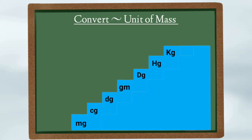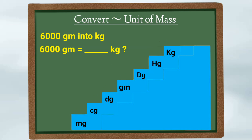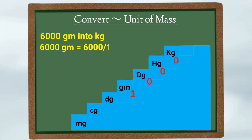Lastly, let's convert units of mass: 6000 grams into kilograms. Gram is a smaller unit than kilogram, so we divide. We put 1 below gram followed by zeros up to kg — that is 1000. So 6000 grams equals 6000 ÷ 1000 = 6 kg. That is, 6000 grams equals 6 kg.